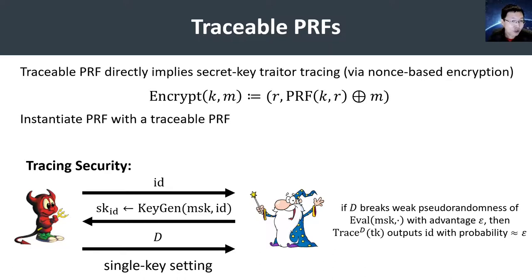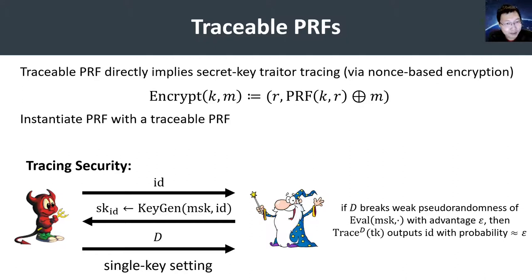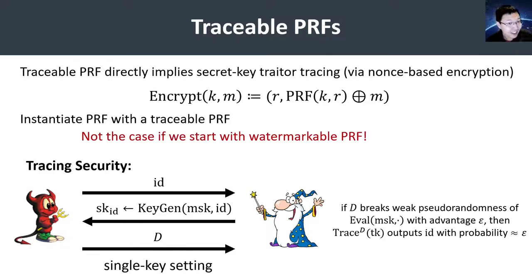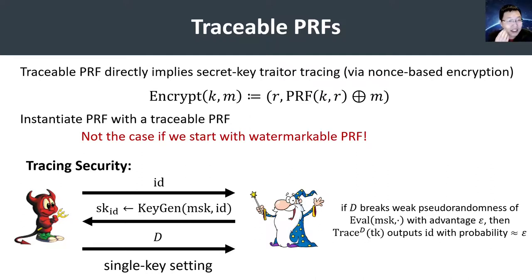One nice property of traceable pseudorandom functions is that we can directly use them to obtain traceable notions of other primitives built from pseudorandom functions. For instance, if we take the construction of symmetric encryption from any PRF and replace that PRF with a traceable PRF, then we get a traceable encryption scheme — in fact, a secret key traitor tracing scheme. This is not the case if we start with a watermarkable PRF, for the reasons outlined earlier. So traceable PRFs allow us to directly take an application depending on pseudorandom functions and derive a traceable version. With watermarkable PRFs, because they satisfy a much weaker security notion, these types of results do not apply.